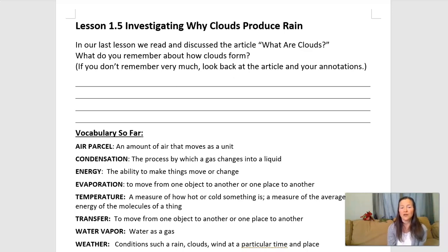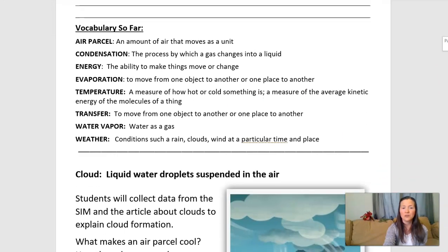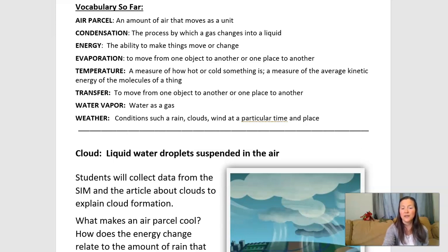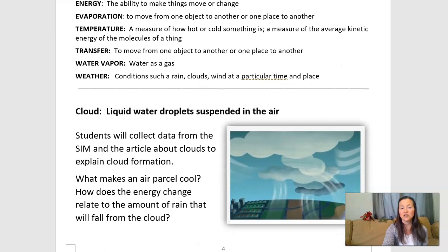Let's review our vocabulary so far. In the packet we have a variety of vocabulary terms we should all be familiar with at this point: air parcel, condensation, energy, evaporation, temperature, transfer, water vapor, and weather. Some of these words we learned in this unit and some we learned back in the thermal energy unit. Today our goal is answering the questions: what makes an air parcel cool, and how does the energy change relate to the amount of rain that will fall from the cloud?